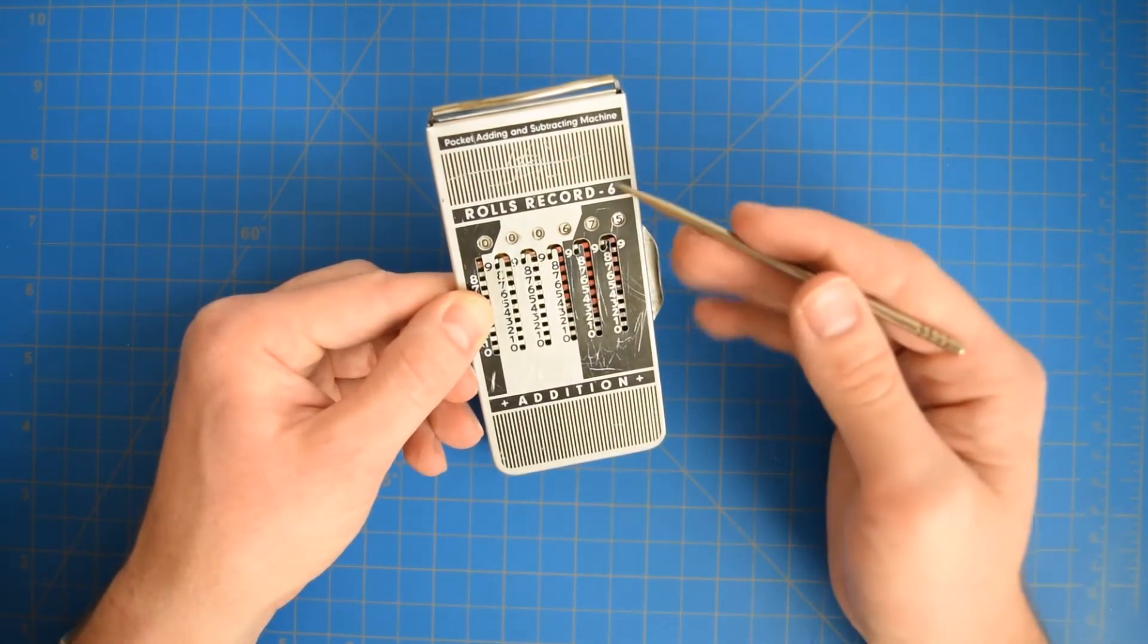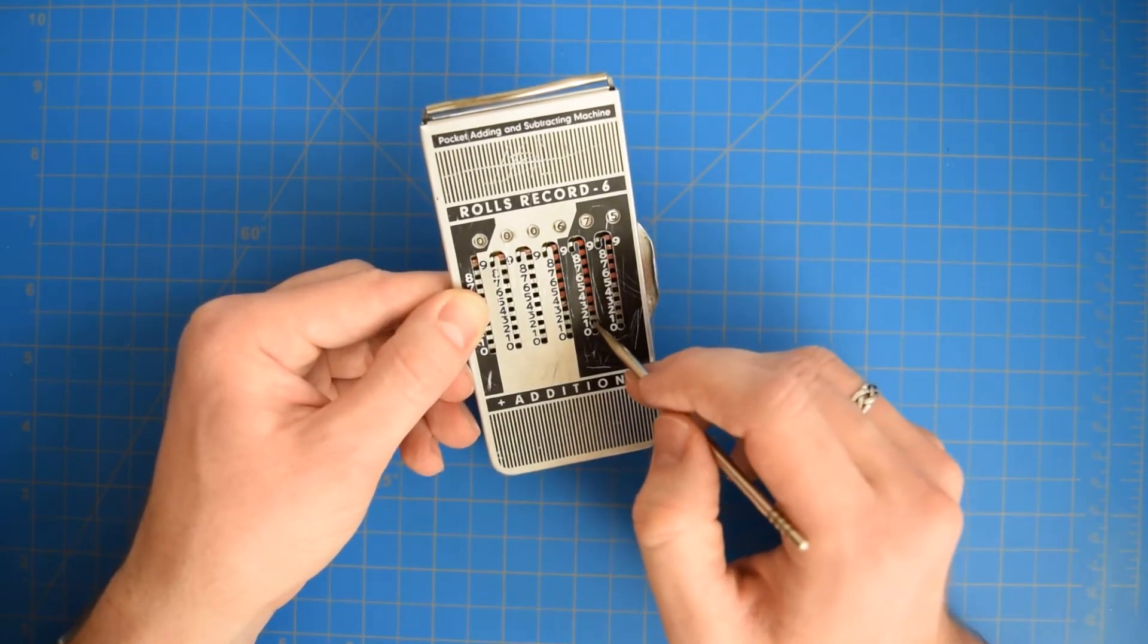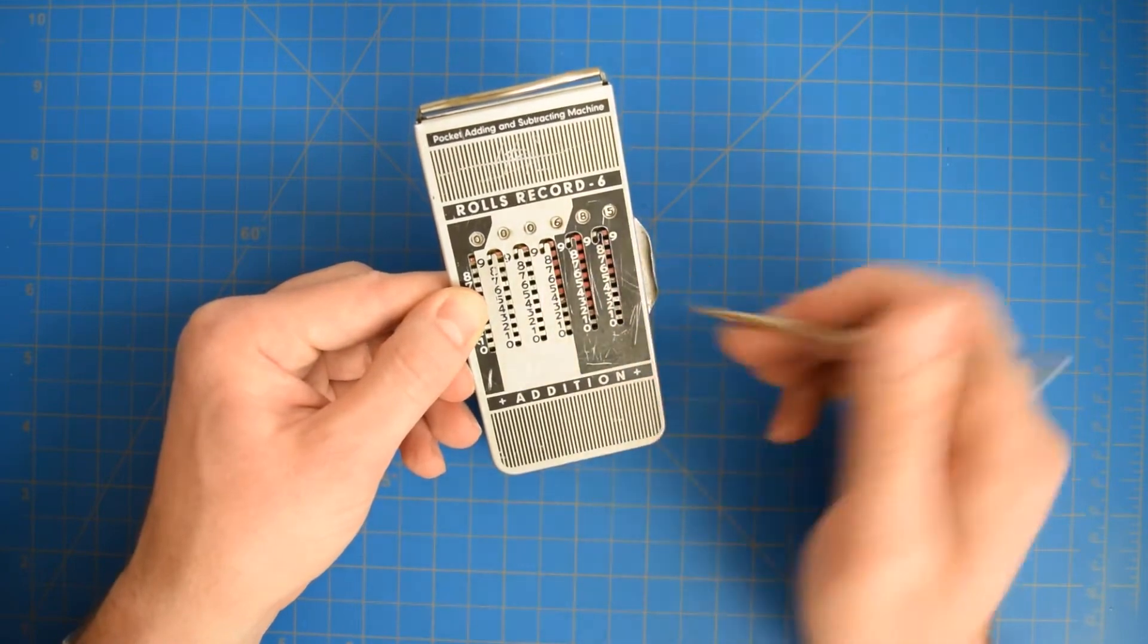So now if we want to add numbers to that, well smaller numbers, it's pretty simple. Say if we wanted to add 10, there we go, we have 685.